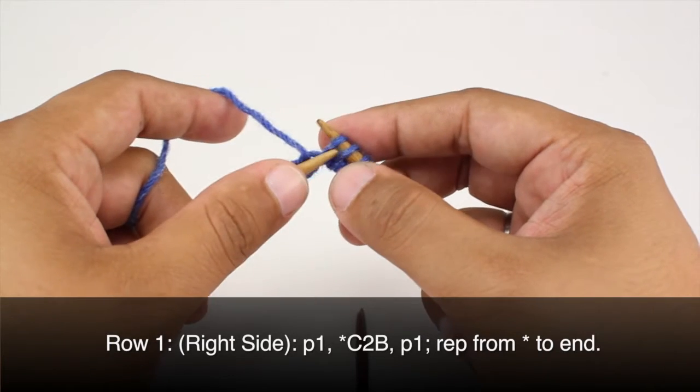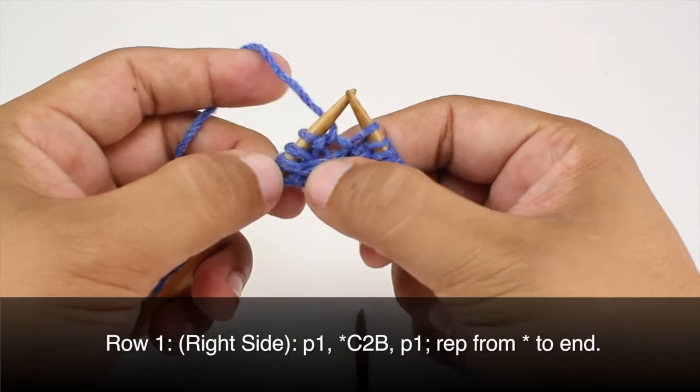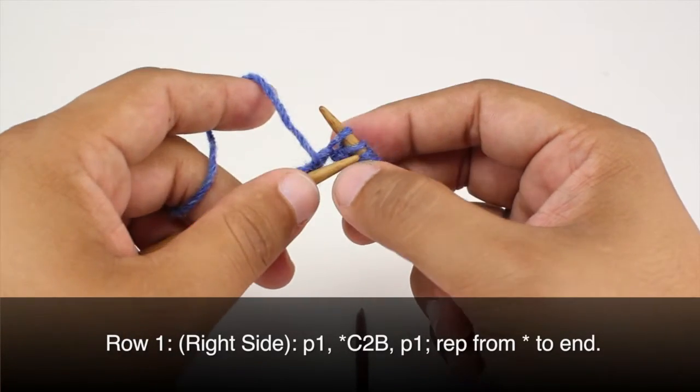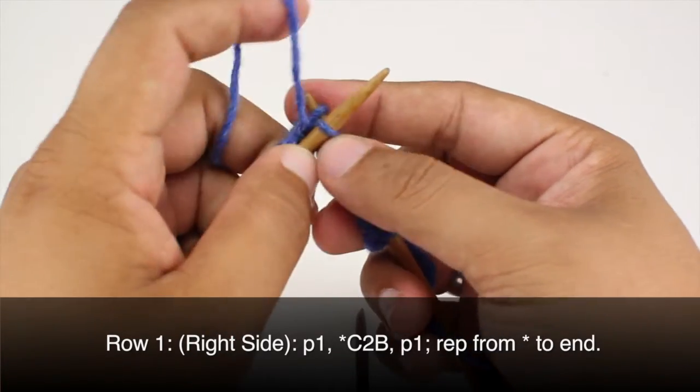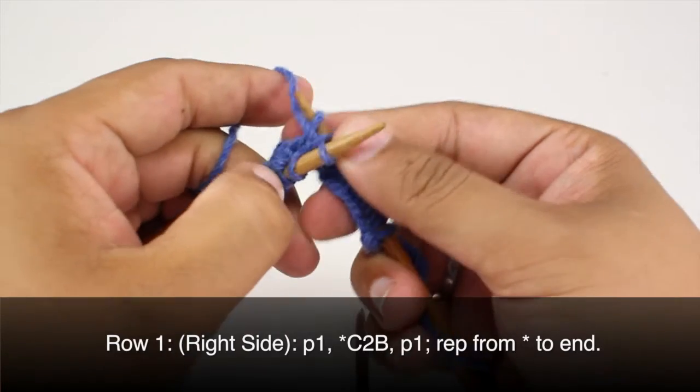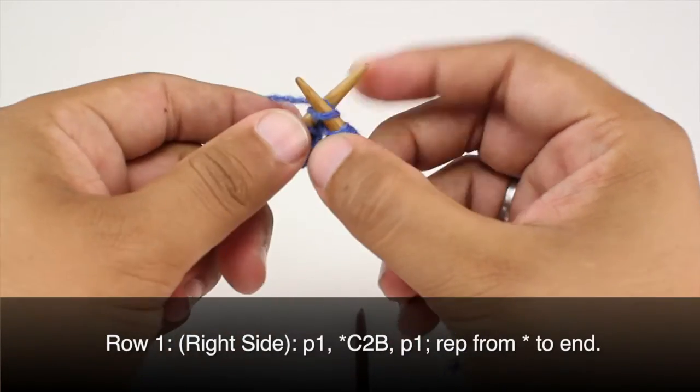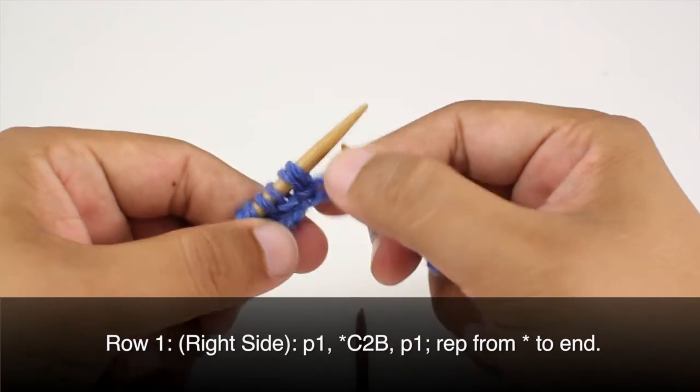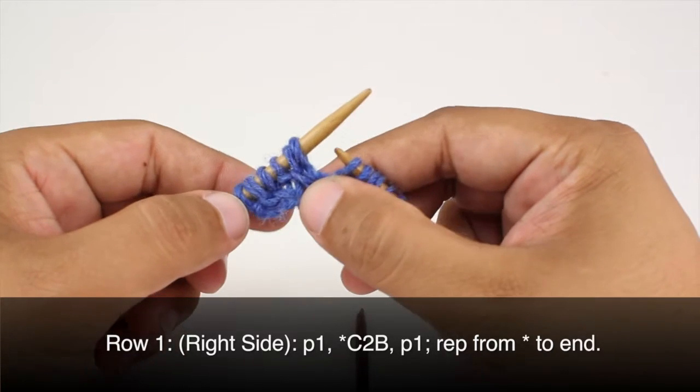Now if you don't want to use a cable needle for just these two stitches you can use a right twist stitch which will have the same effect. So we're just going to knit into the second stitch in our row. We'll keep that on the needle and then we'll knit into the first stitch. And then we'll slip that off.